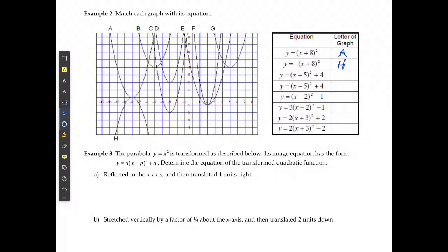For the next one, my p value is negative 5, my q value is positive 4. So I start at the origin and go to negative 5 and positive 4, and the only one that runs through and has a vertex at this point is B.